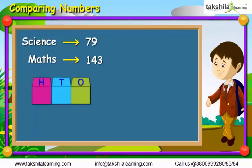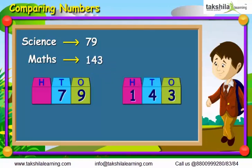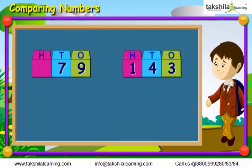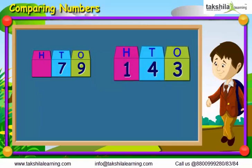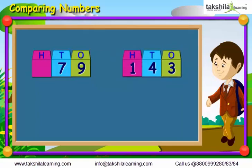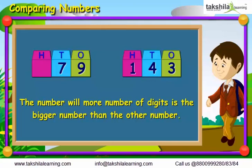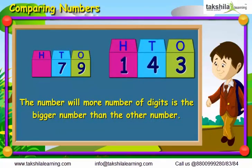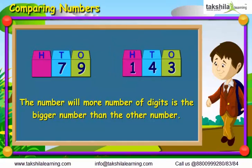Place 79 and 143 together as shown. 79 has 2 digits, whereas 143 has 3 digits. A very important point to remember is that the number with more number of digits is the bigger number. In this case, 143 is a bigger number than 79, as 143 has 3 digits and 79 has 2 digits.